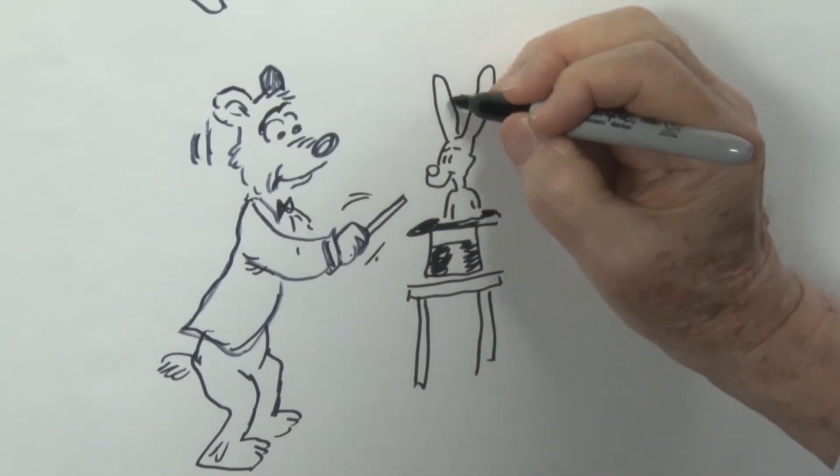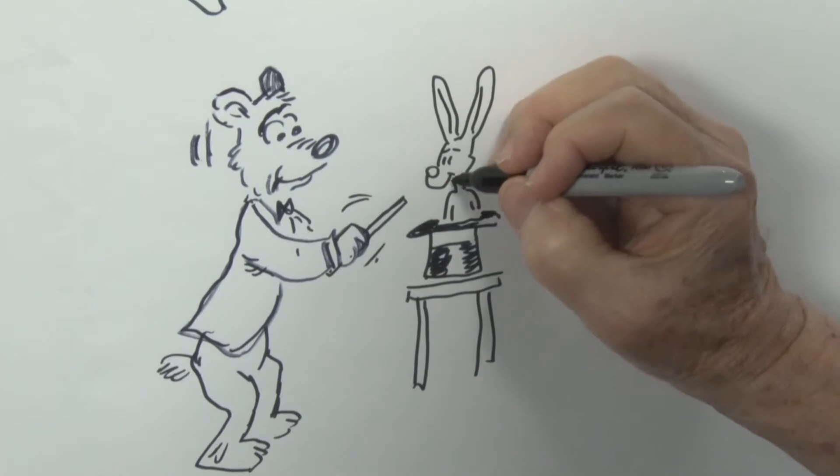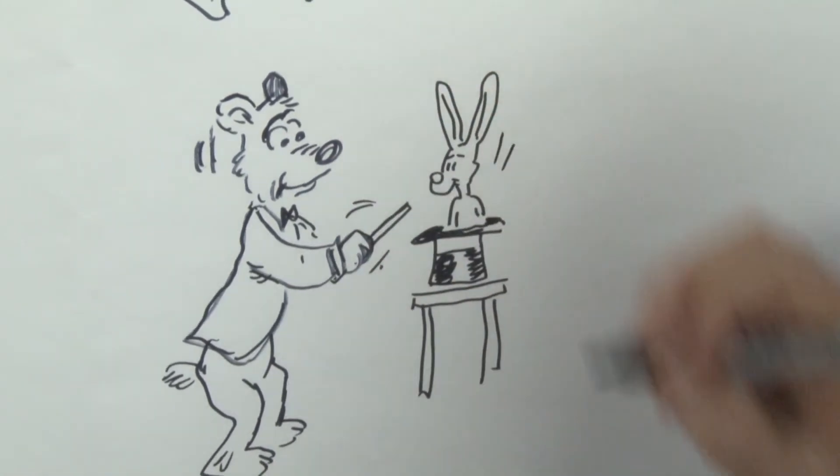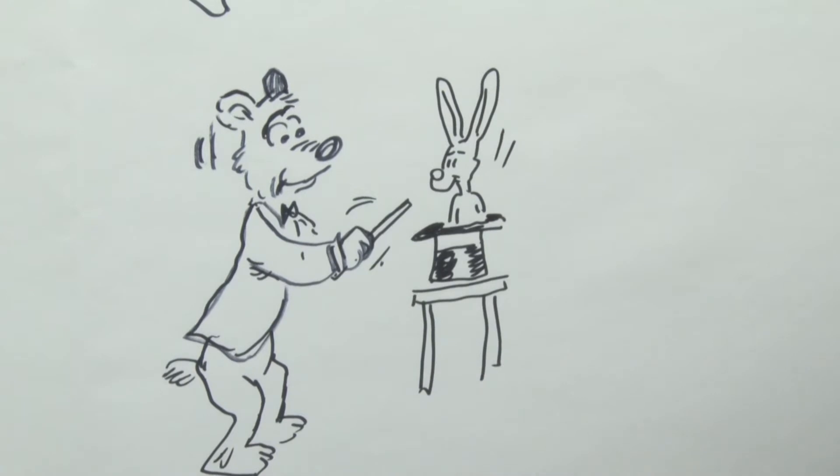A rabbit just popped up. Surprised the magician because he wasn't sure that the trick was going to work. But, as they say in French, voila, there comes a rabbit. That's the reason he's so surprised, of course.